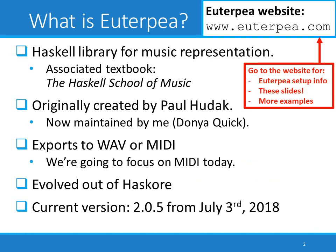Euterpe is a library for music representation and algorithmic composition in Haskell. It was originally created by Paul Hudak, who was my PhD advisor, and I'm now the active maintainer for the library. Euterpe can export to both WAV format and also MIDI format. Today we are only going to be looking at MIDI output, so the sounds you're hearing will be coming from other software, and Euterpe is just going to be controlling what notes are played and when. We're going to be working with Euterpe version 2.0.5, which was released on July 3rd this year.